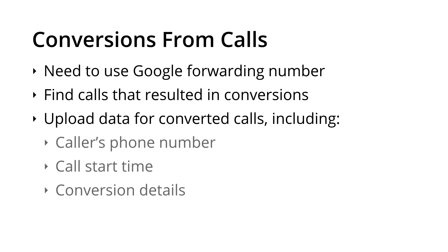Here's an example: a car dealership offering test drives captures the GCLID in their booking form when people click through on ads. When customers come in and purchase a car, the dealership finds the GCLID for those buyers and uploads the IDs, showing the offline transactions inside Google Ads. We also have the option of uploading conversions from phone calls, which requires using a Google forwarding number. You upload details including the caller's phone number, time of call, call duration, and the conversion you'd like to track.